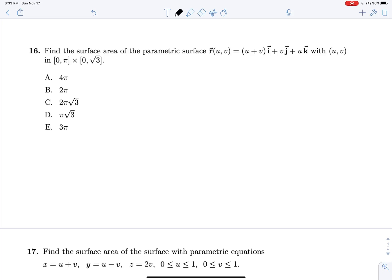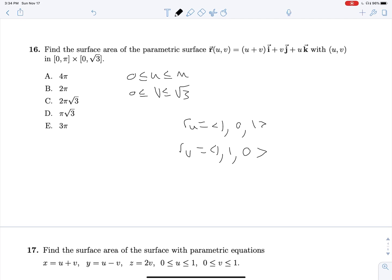We're finding the surface area for this parametric surface where zero is less than or equal to U, which is less than or equal to pi, and zero is less than or equal to V, which is less than or equal to root three. So all we need is RU cross RV. RU is going to be 1, 0, 1, and RV is going to be 1, 1, 0. And so now we can cross these. And crossing we will get negative 1, 1, 1.